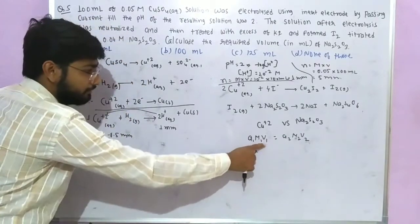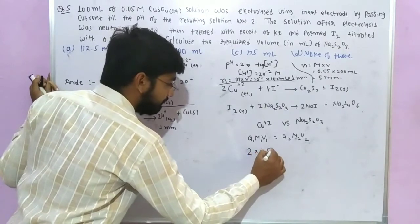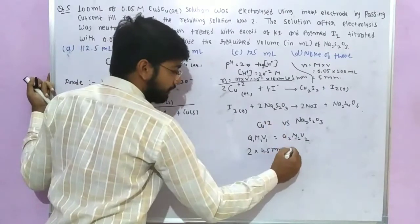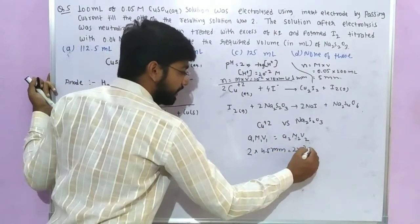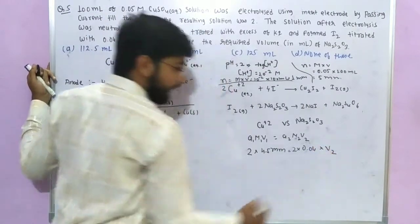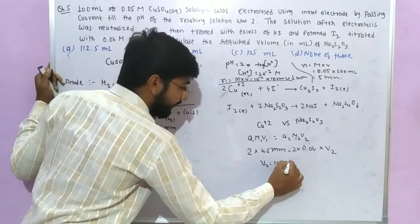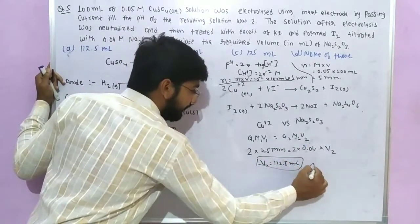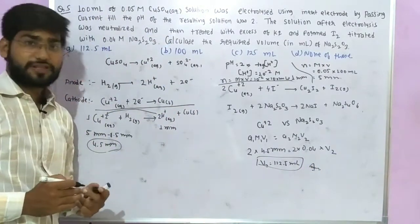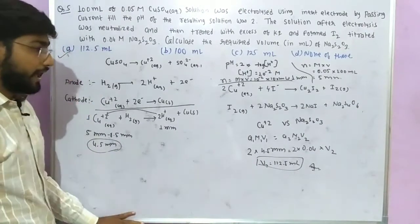The remaining 4.5 millimoles of Cu²⁺ reacts with KI to form iodine. Using n₁V₁ = n₂V₂: moles of Cu²⁺ relate to moles of hypo, with molarity of hypo = 0.04 molar. Calculating the volume: 4.5 millimoles / 0.04 molar = 112.5 milliliters. So the required volume of hypo is 112.5 mL. This corresponds to option A, which is the correct answer.